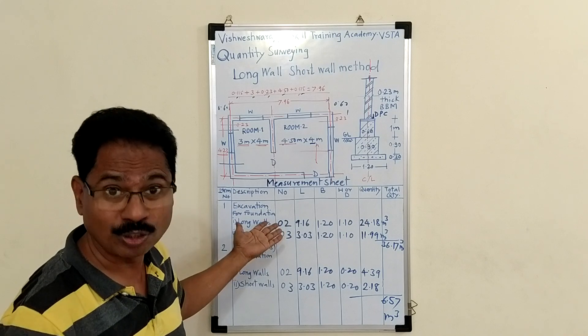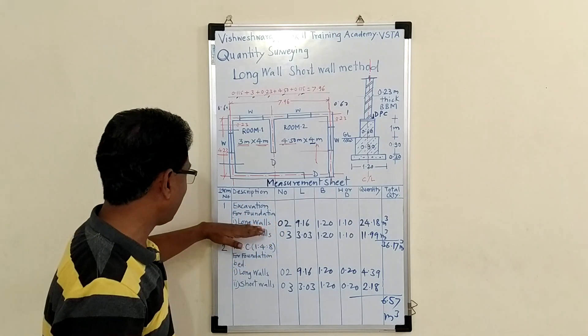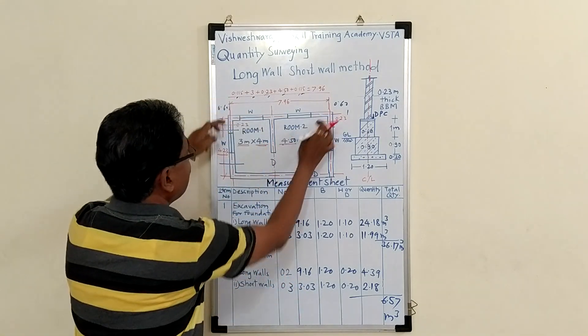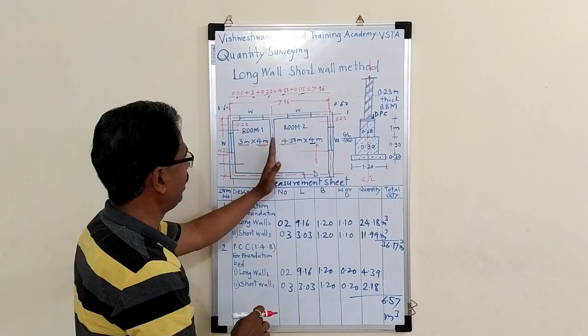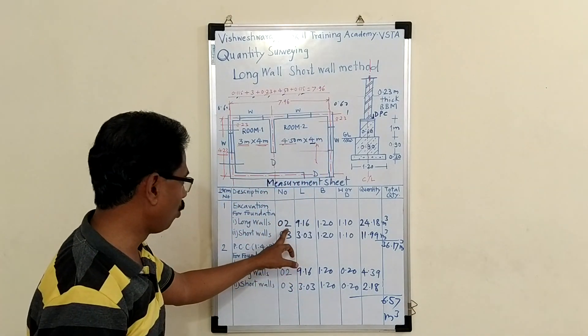First, item, of course, excavation. Excavation for foundation in long wall short wall method. Long walls, here are two long walls and one, two, three short walls. Two long walls.